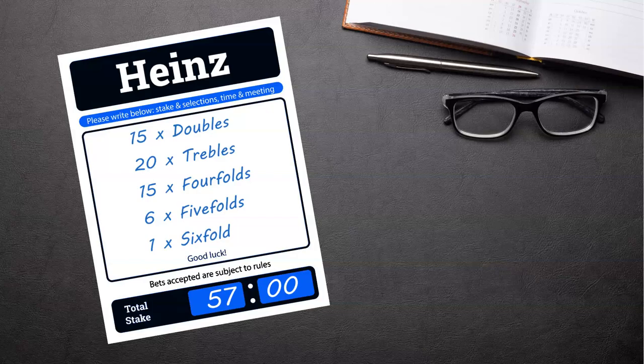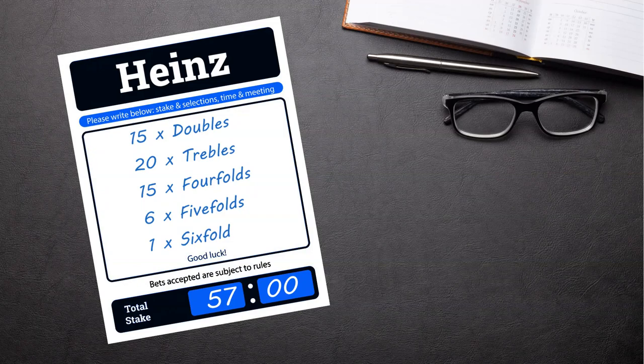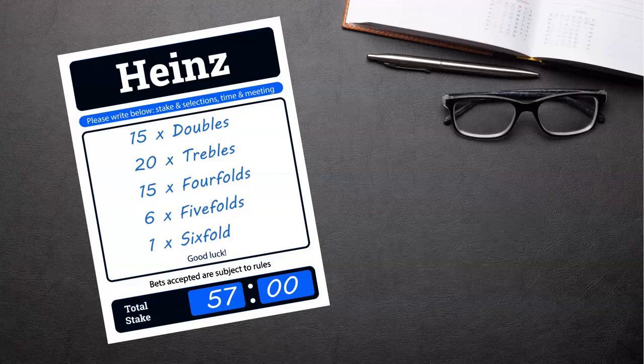So if you had a £1 Heinz, it would cost you a total of £57. The bet is typically used for backing six horses in six different races, or backing six football teams to win. However there is nothing to stop you mixing and matching different sports within the one bet.